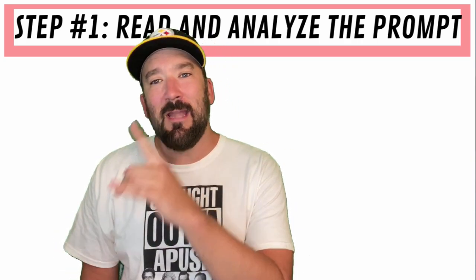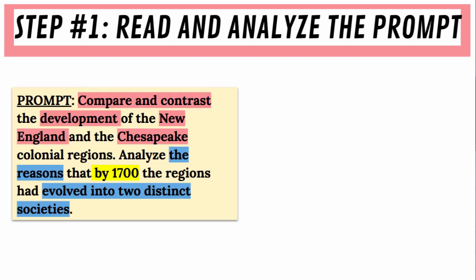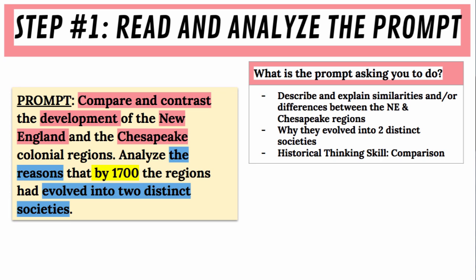Step one is to read and analyze the prompt. This is the sample prompt we are going to be working with — I encourage you to pause and read it. As you read the prompt, annotate the different parts of the question in the margins and break down the question. What is the prompt asking you to do? Are there multiple parts? In this question we need to describe and explain similarities and differences between the New England and the Chesapeake regions, and analyze why by 1700 these two regions evolved into two distinct societies. Identify what historical thinking skill is being assessed — in this case, it's a comparison question.